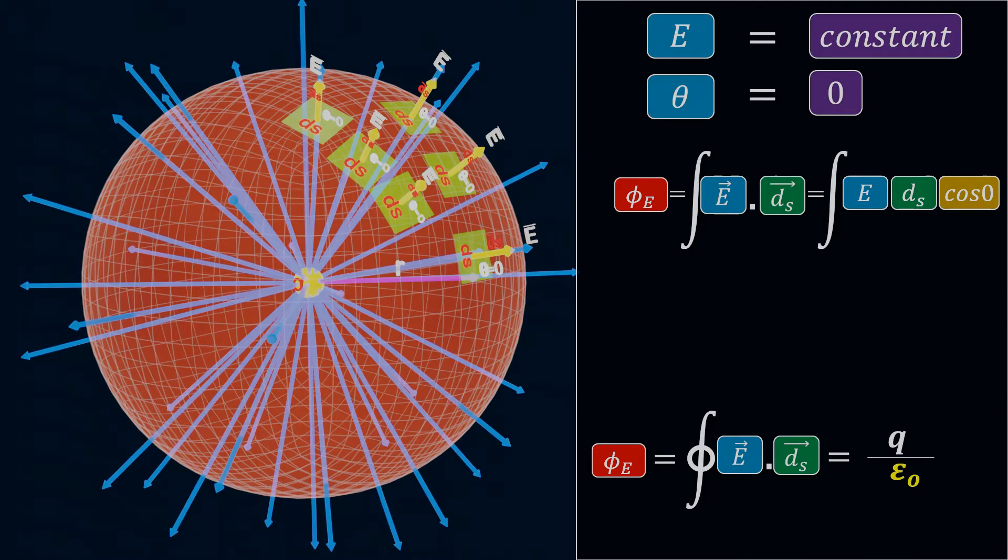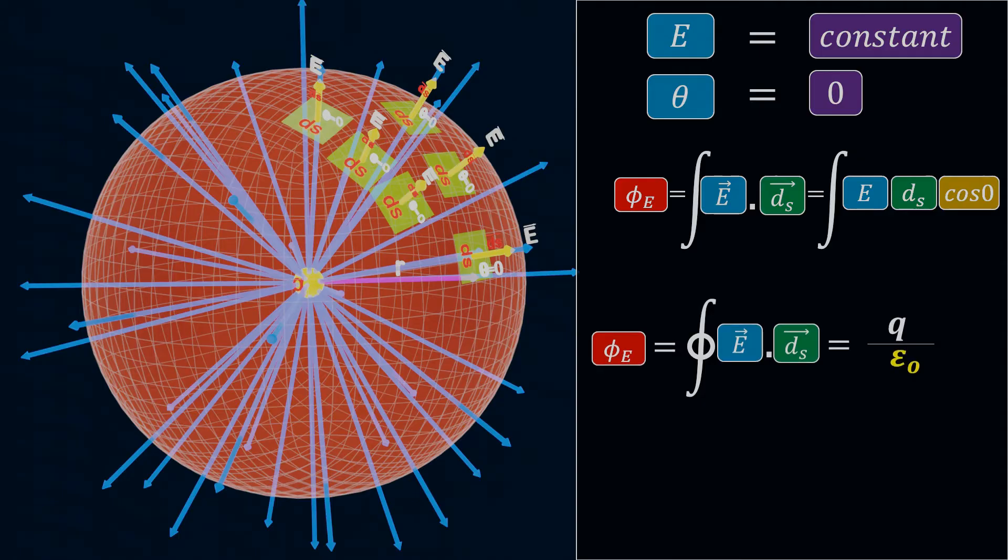So, we have proven that the electric flux linked to a closed surface due to a charge enclosed in it is equal to Q divided by epsilon naught. In other words, we can also express it as 1 upon epsilon naught times charge Q.